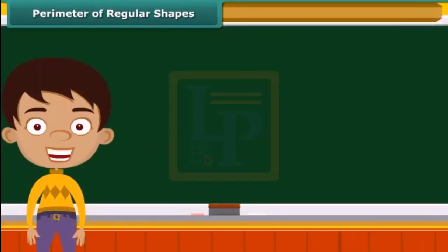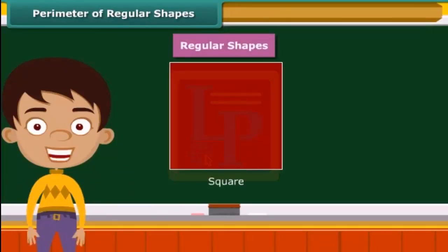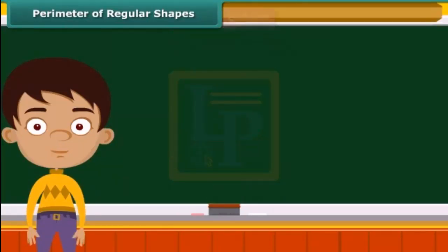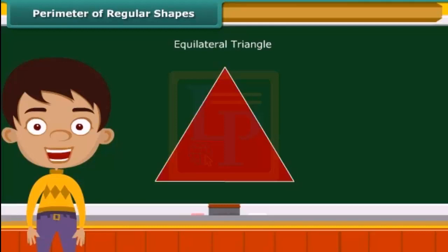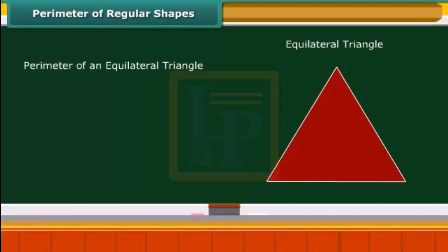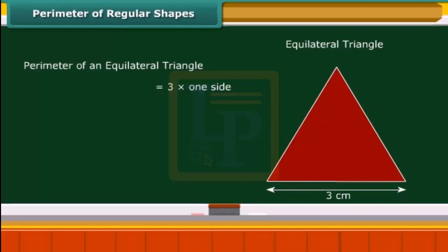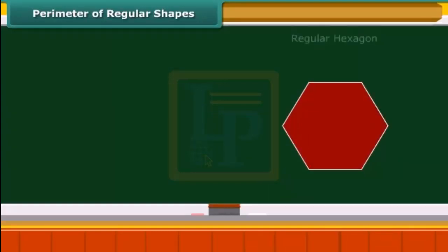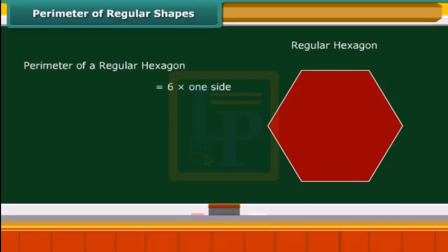Shapes that have all sides of equal length and all angles of equal measure are known as regular shapes. A square is a perfect example. Another regular shape is the equilateral triangle, whose 3 sides are equal. The perimeter of an equilateral triangle is 3 multiplied by its side — for a triangle of side 3 cm, the perimeter is 9 cm. The perimeter of a regular hexagon is 6 multiplied by its side — for a hexagon of side 5 cm, the perimeter is 30 cm.